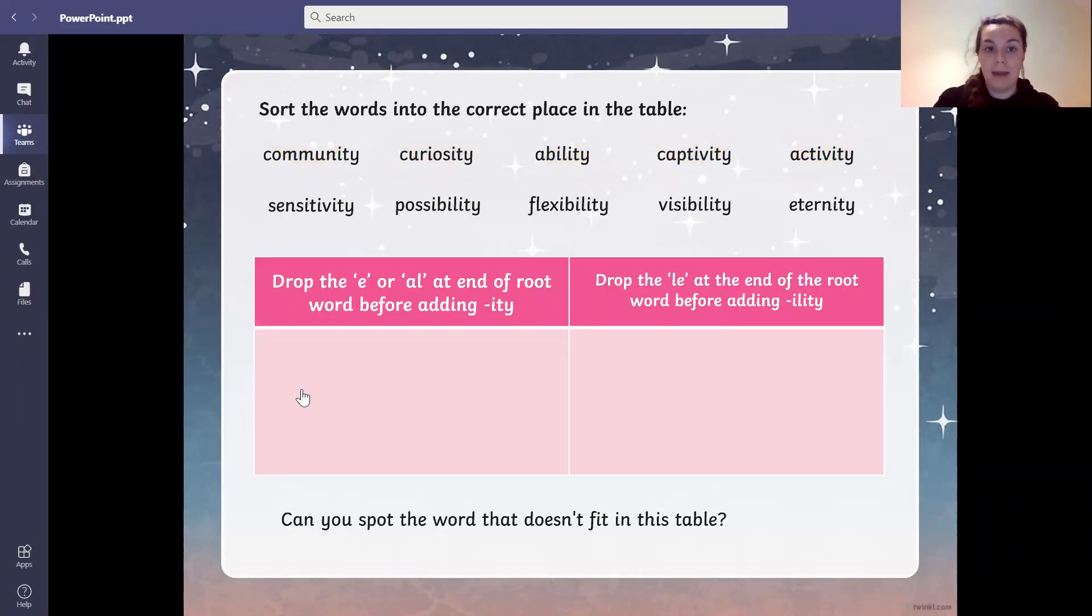Let's sort them into the correct place in the table. So in community, do we drop the e or the al at the end of the root word? So is it communal or commune? Let's see. We drop the e or al at the end of the root word before adding -ity. So we have communal and commune. A commune is a place where people live, communal is a place where people share things.